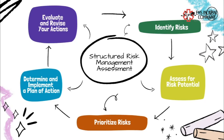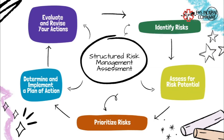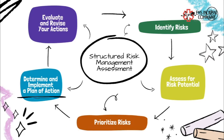This is the gold standard for all public agencies around the United States. The five steps of the risk management process are: identify if risk potential exists, assess for risk potential, prioritize risks to address first, determine and implement a plan of action, and evaluate and revise your actions.